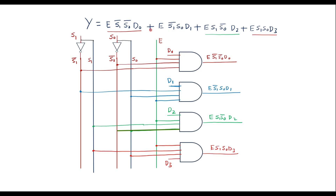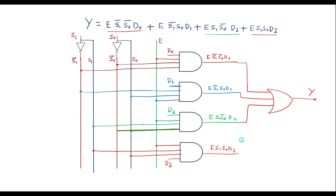There is a plus (OR) between each product term, so all four AND gate outputs are connected to a 4-input OR gate. The output of the OR gate is Y. This is the complete logic circuit of the 4-to-1 multiplexer. Thank you for watching.